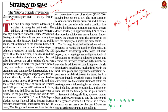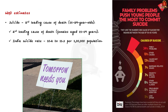As per WHO estimates, suicide is the second leading cause of death globally among 15 to 29 year olds. In India, more than 1 lakh lives are lost every year to suicide. In the past three years, the suicide rate has increased from 10.2 to 11.3 per 1 lakh population. As per National Crime Records Bureau statistics, the most common reasons for suicide include family problems, illnesses, marital conflicts, love affairs, bankruptcy, substance abuse and dependence.